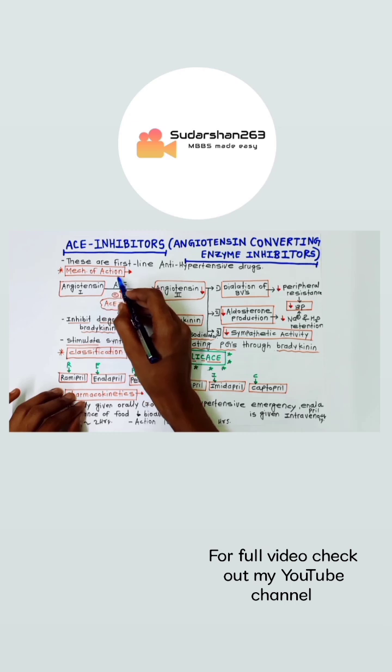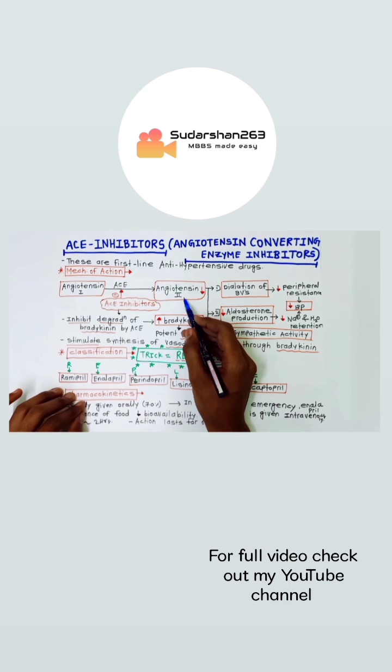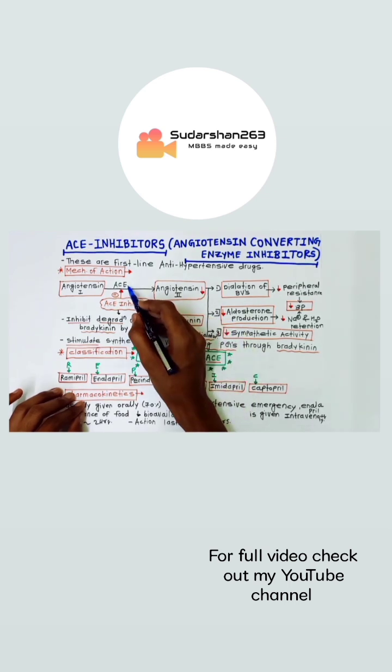Next is mechanism of action. Angiotensin 1 is converted to angiotensin 2 in presence of the enzyme angiotensin converting enzyme. ACE means angiotensin converting enzyme.